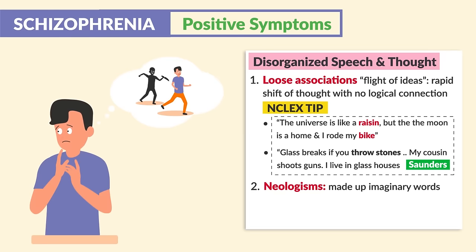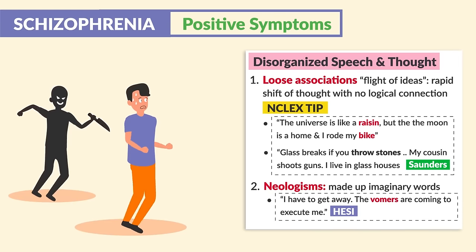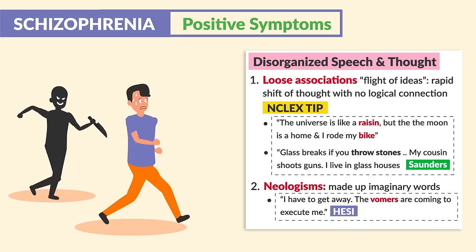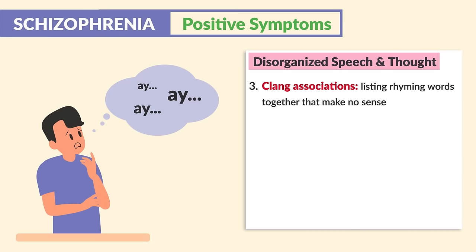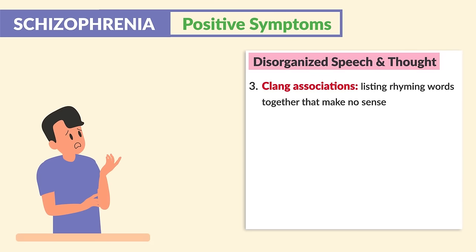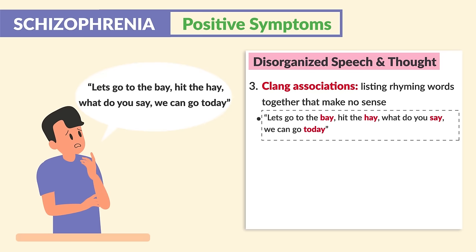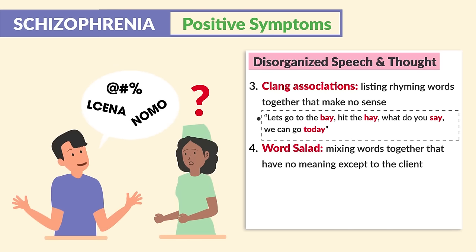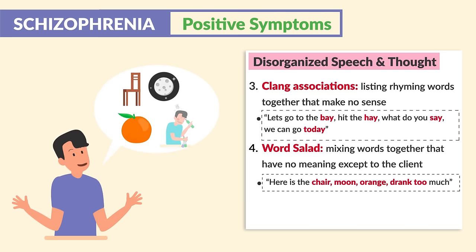Number two is neologisms — made-up imaginary words. For example, a client states: 'I have to get away. The vomers are coming to execute me.' 'Vomers' is a made-up word. Number three is clang associations — listing rhyming words together that make no sense. For example: 'Let's go to the bay. Let's hit the hay. What do you say? We can go today.' All these words rhyme but don't make sense. And number four is word salad — mixing words together that have no meaning except to the client: 'Here is the chair. Moon orange drank too much.' All the words are mixed together, hence the name word salad.